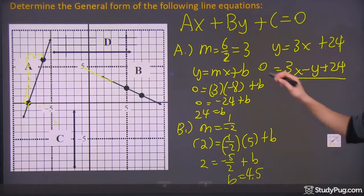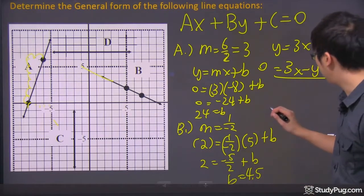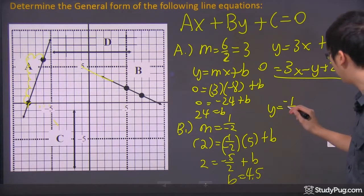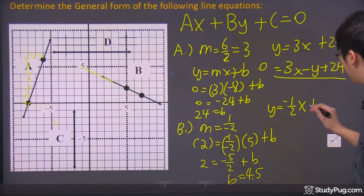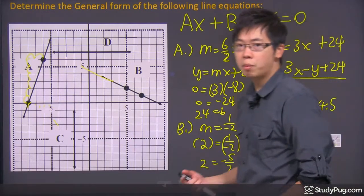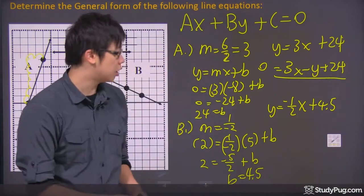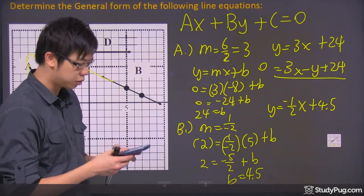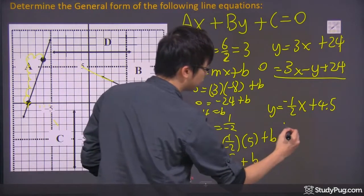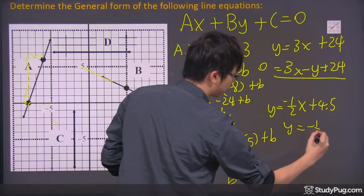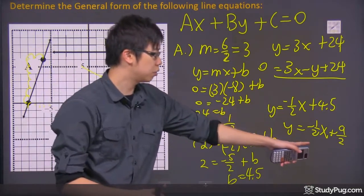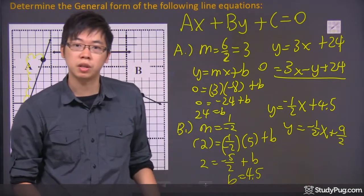If you move it over, it becomes positive 2.5. Positive 2.5 plus a 2 down here, it gives you the 4.5. So this B down here is actually just 4.5. So your final answer for the B line is—not final answer yet—it's just going to be negative 1 over 2 X plus 4.5. Now, the problem is 4.5 is not a good number to use. Technically, it's actually just 9 over 2.